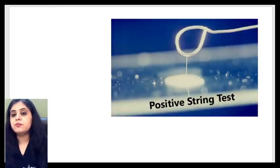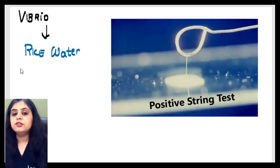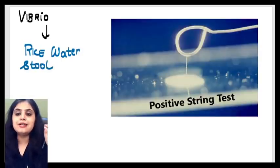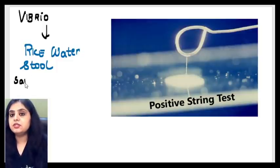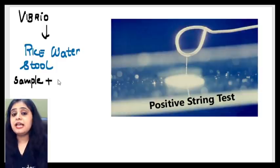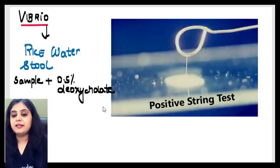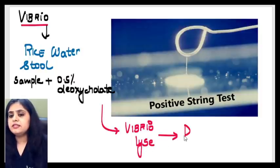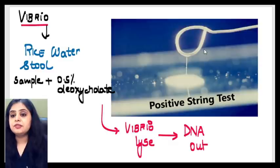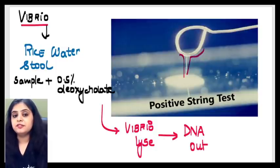Coming to the next test which is shown by Vibrio cholera, and that is the string test. So I think everyone is aware that when we are talking about Vibrio, the kind of sample that we get from the patient is very classically defined rice water stools. So when you take the sample from the patient, be it a rice water stool or any sample, and you treat it with 0.5% deoxycholate, what is deoxycholate? It is basically a kind of bile salt. When you treat it with deoxycholate, the Vibrio, if Vibrio is present in that sample, it will become lysed. And if it lyses, do you agree that the DNA is going to come out? The DNA that comes out of the cell gives you this stringy appearance.